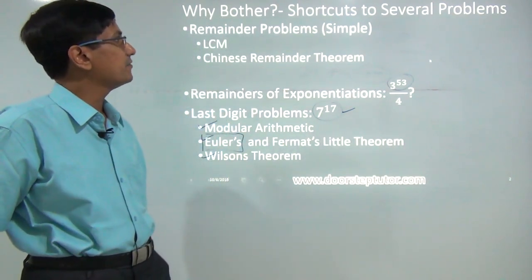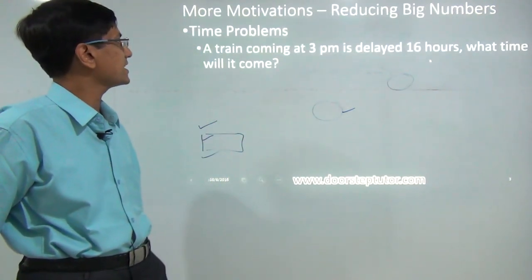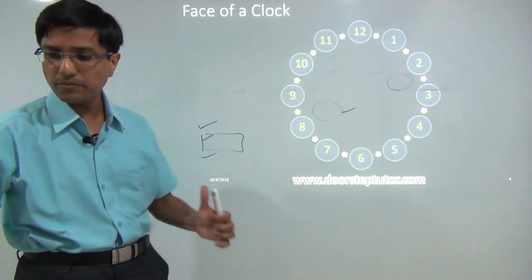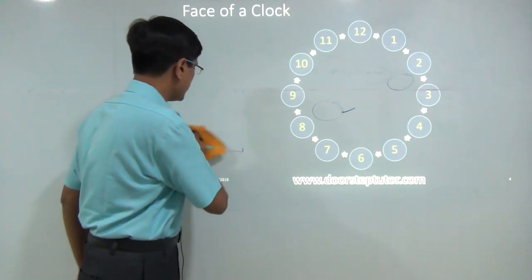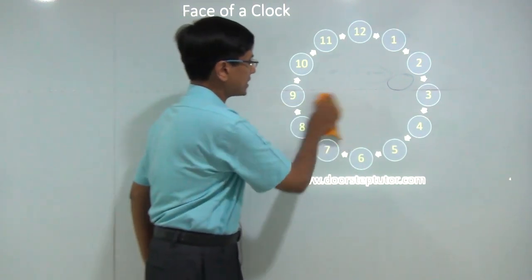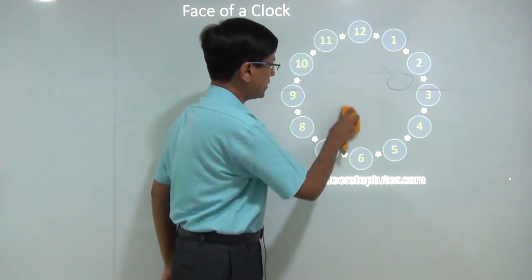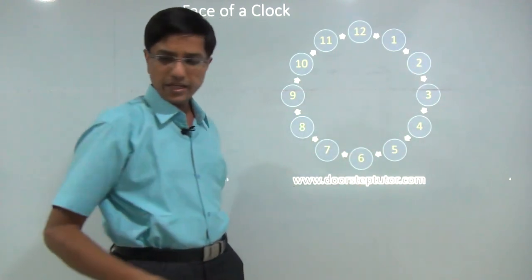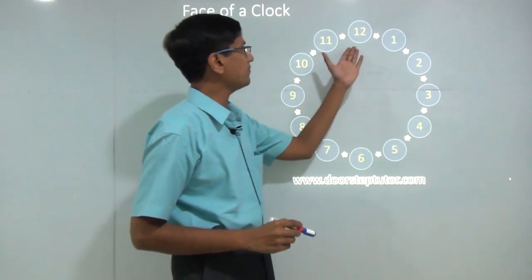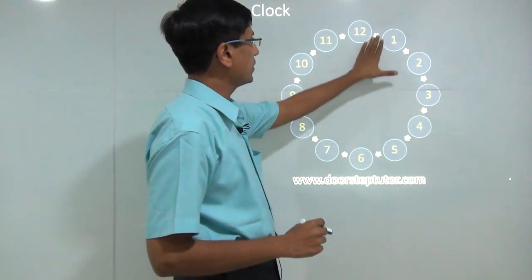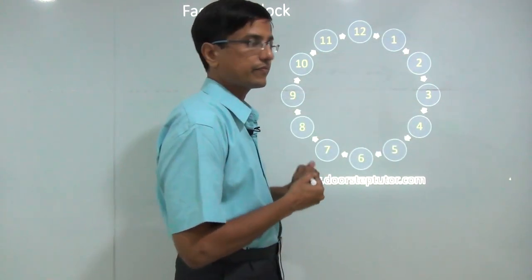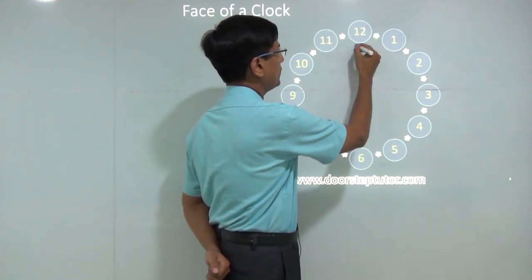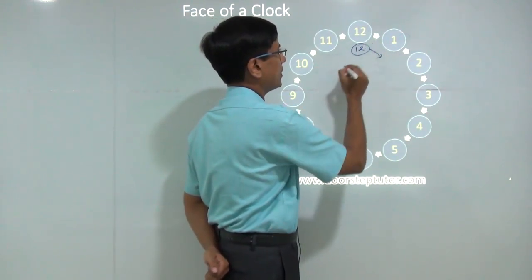With that motivation, let's get started. Let's understand what we mean by Modular Arithmetic — what does it really mean to express numbers as remainders? Here is the face of a clock. In a clock, there are 12 hours in a day, and once we go past 12, we always come back to 1.